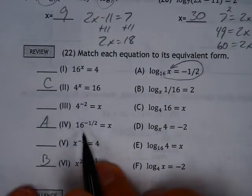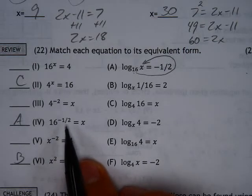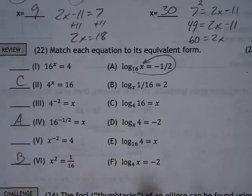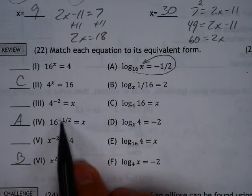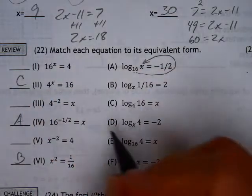And 16 to the negative 1 half power, remember, 16 to the 1 half power is the square root of 16, and that's 4. But the negative means we've got to flip-flop it. Not flip-flop this and make it a 2, but flip-flop 16. So this becomes 1 over 16, first of all.